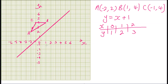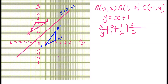When we reflect triangle ABC through the line y = x + 1, for example point A reflects to a new position — that is A prime. We reflect B and C similarly to get triangle ABC prime.